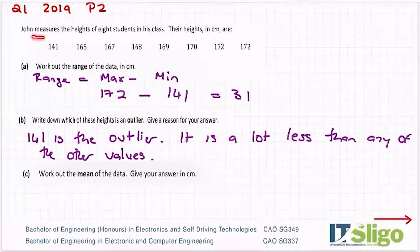It is a lot less than any of the other values. So if I was John looking at my data, well, he's going to know, but it's either a smaller person or he's made an error in his measurement. Either of those two are probable.